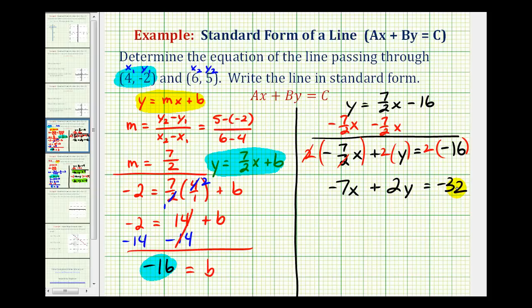Now this is the equation in standard form, but there is one more thing that you often see. A lot of times it's preferred if the coefficient of x is positive rather than negative. So we could multiply everything by negative one, so that this would be positive seven rather than negative seven.